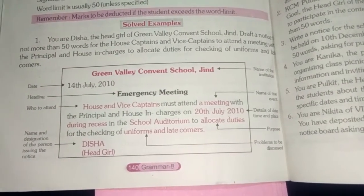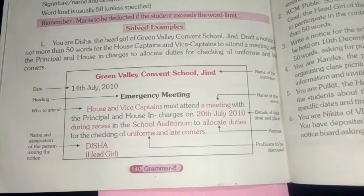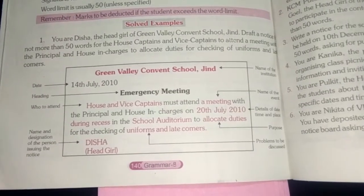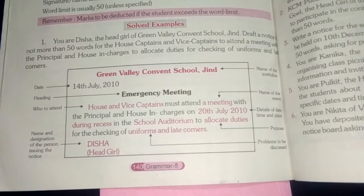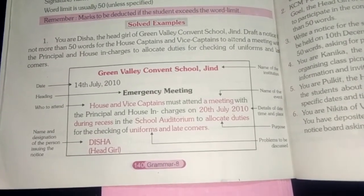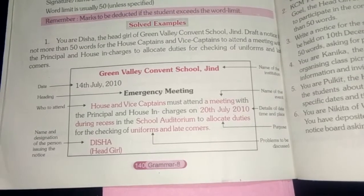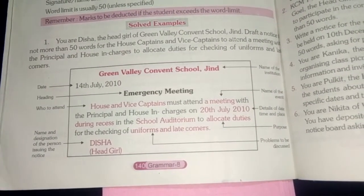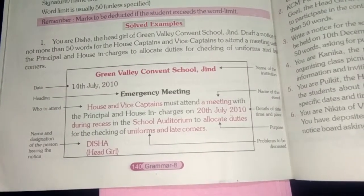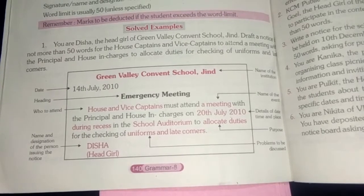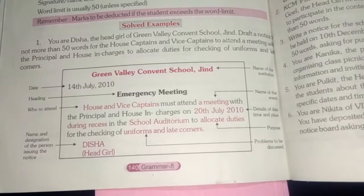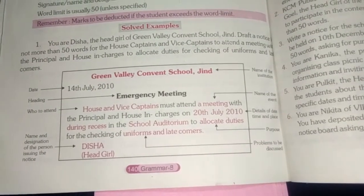Now the notice is done. Let's see how we have arranged the information given in the question. First: who will attend the meeting? Second: what will they attend — so the word 'meeting' must appear. Third: with whom is the meeting — principal and house in-charge. Fourth: when will it be — date and time must be included. Fifth: where will the meeting be — so you mention the school auditorium as the place.